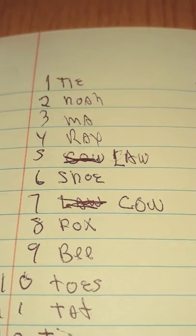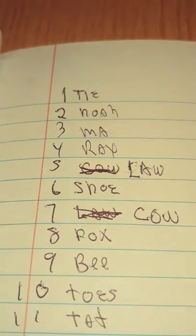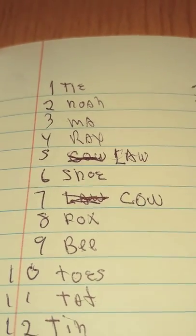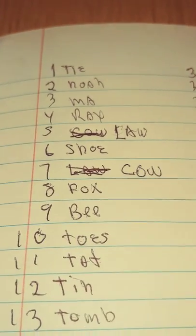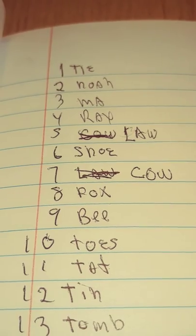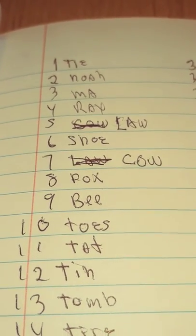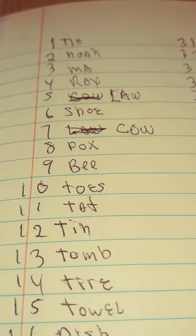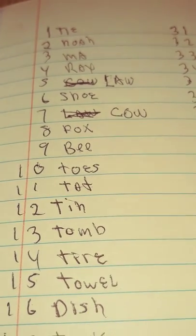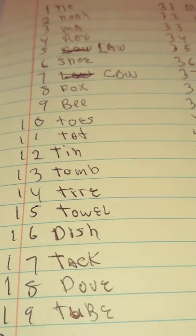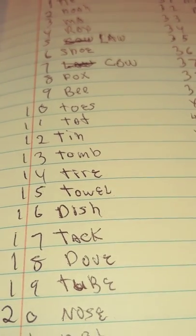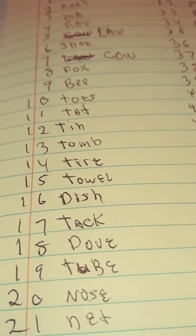Following on, I'm gonna do 11 is tack, like tattoo. We've got 12 tin, 13 tomb, 14 tire, 15 tile, 16 dish, 17 tack, 18 dove, 19 tub, and 20 nose.